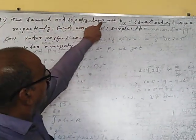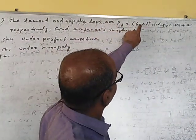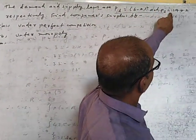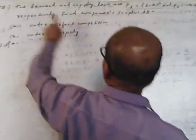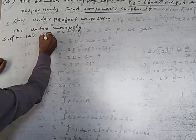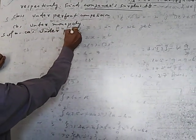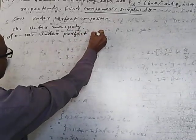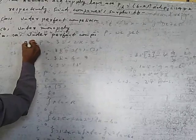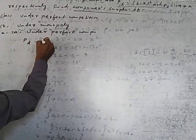Question number 4: the demand and supply laws are PD equal to 6 minus x square and PS equal to √(14 plus x) respectively. Find consumer surplus under perfect competition.